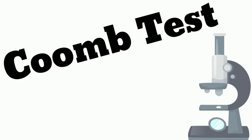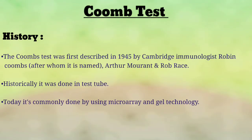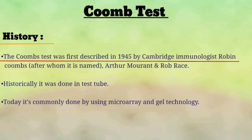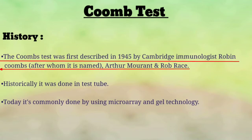Today we are discussing about the Coombs Test. Firstly, we will discuss the history of the Coombs Test. The Coombs Test was first described in 1945 by Cambridge immunologist Robin Coombs, after whom it is named. Arthur Mourant and Robres also participated.